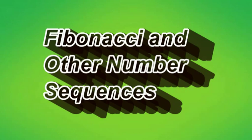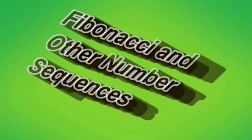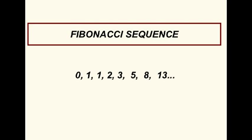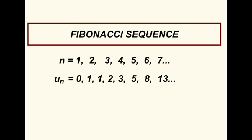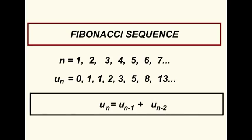Nature shows us many examples of spirals, but they usually have the same mathematical and geometrical basis. They're all based on the Fibonacci sequence. In the Fibonacci sequence, each term after the first two terms is the sum of the previous two terms.